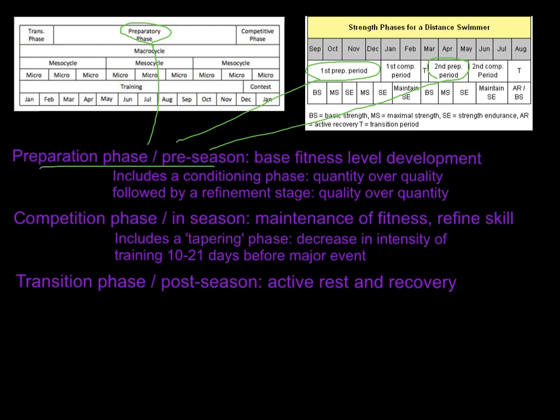Your fitness should be in place by the start of in-season - it's just about refining what you're doing. It will include what we call a tapering phase, where you decrease the intensity of training for 10 to 21 days before a major event, so you don't go into that event injured or fatigued. You might think about reversibility - will you lose fitness in 10 to 21 days? If you've had a good pre-season, worked hard, and been competing regularly, you will not lose anything in that period.